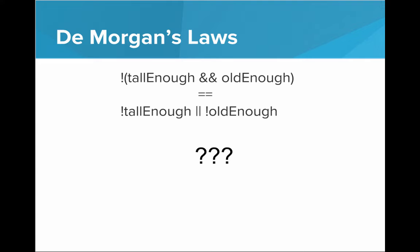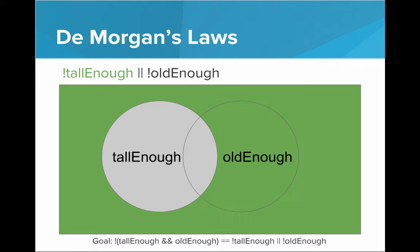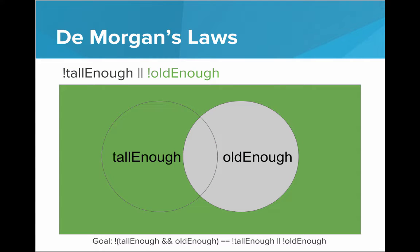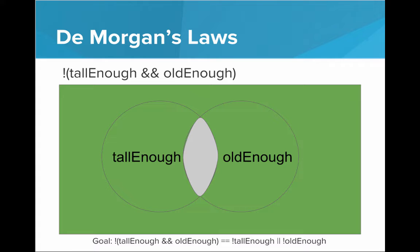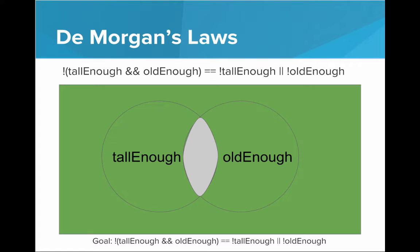DeMorgan says that is equal to all the people who are not tall enough OR not old enough. Let's see if that's true. Everything in green is all the people who are not tall enough — the opposite of people who are tall enough. And everything in green is all the people who are not old enough. If we want all the people who fit into either of those categories, we combine all that green. Putting the green together, we get the group of people who are not tall enough or not old enough — and we see this is exactly the same as what we had for NOT (tall enough AND old enough). Therefore, they are equivalent.